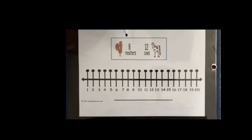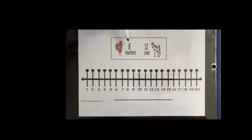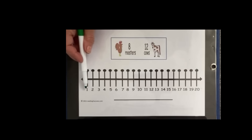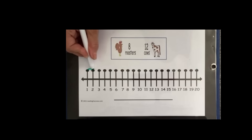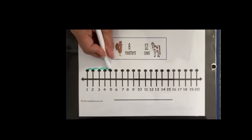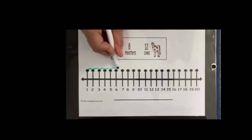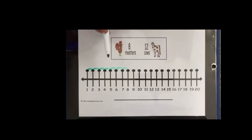The equation is 8 roosters plus 12 cows. We're going to begin with the number line. They are going to start with 8. The first part of the number line already has the 1, so they're going to count: 1, 2, 3, 4, 5, 6, 7, 8. This represents 8 roosters.